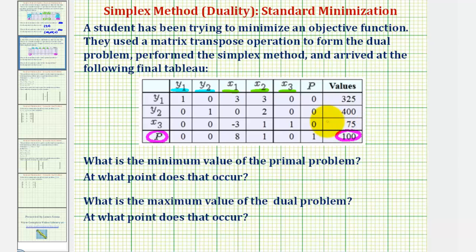notice that 1p or p equals 100, indicating that 100 is the maximum value of the dual problem, and also the minimum value of the primal problem. So this would be 100, and so would this.